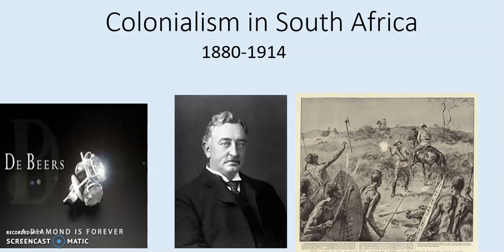This lecture specifically focuses on colonialism in South Africa. This is a picture of Cecil Rhodes, and this is a picture of the De Beers Diamond Corporation. This right here is a picture of the Ashanti Wars. We can now engage with what led to the causes in South Africa, and we also focus on Germany and Southwest Africa and the historical implications of that.